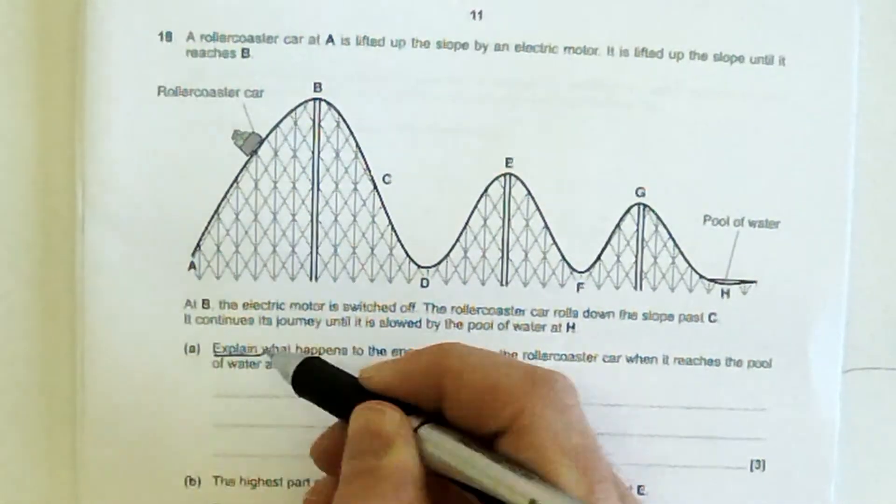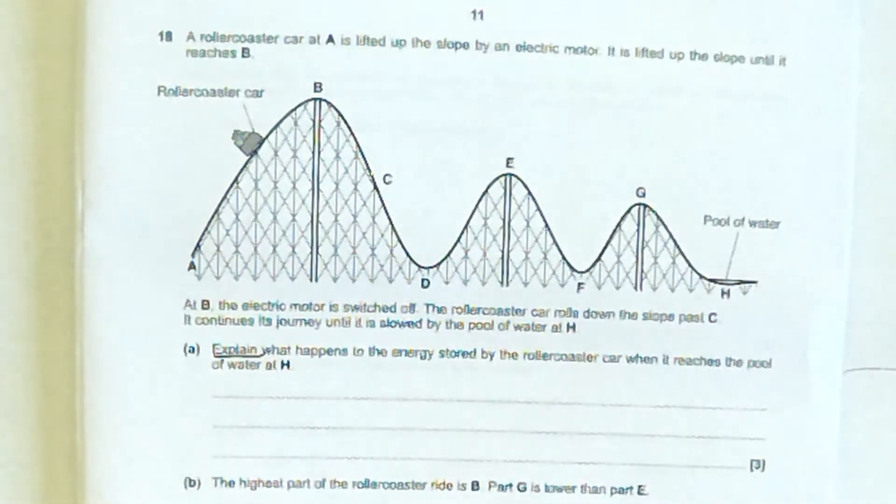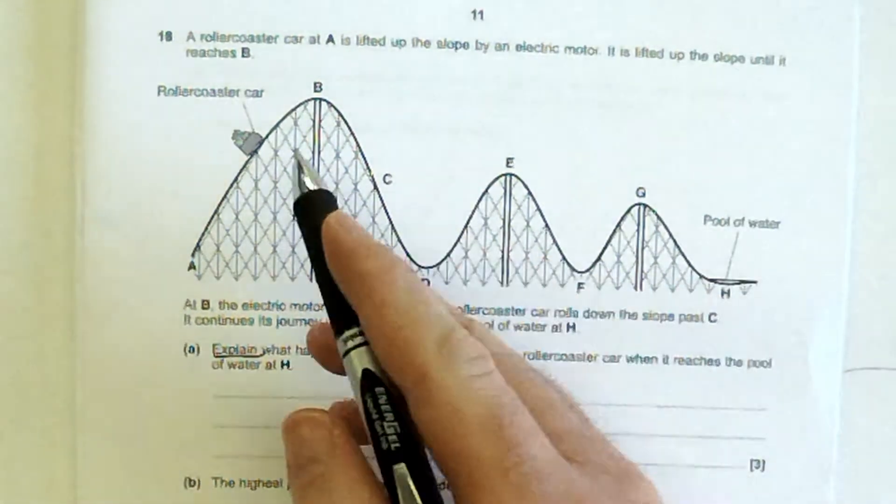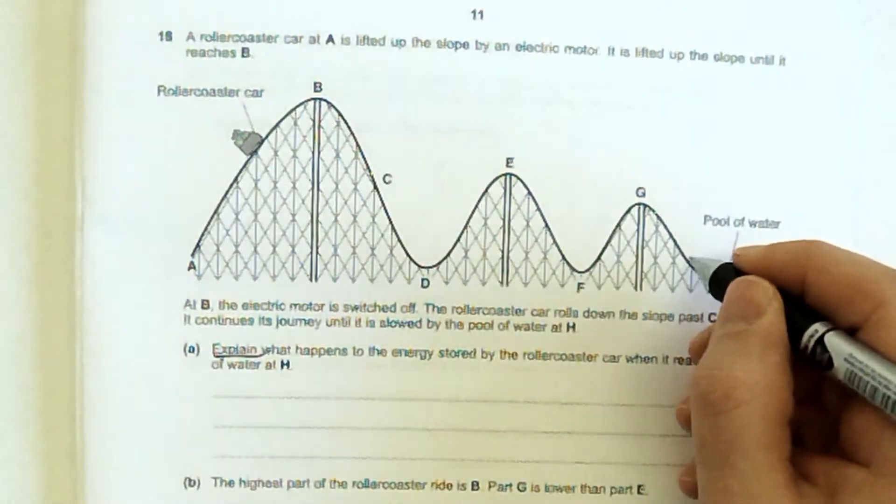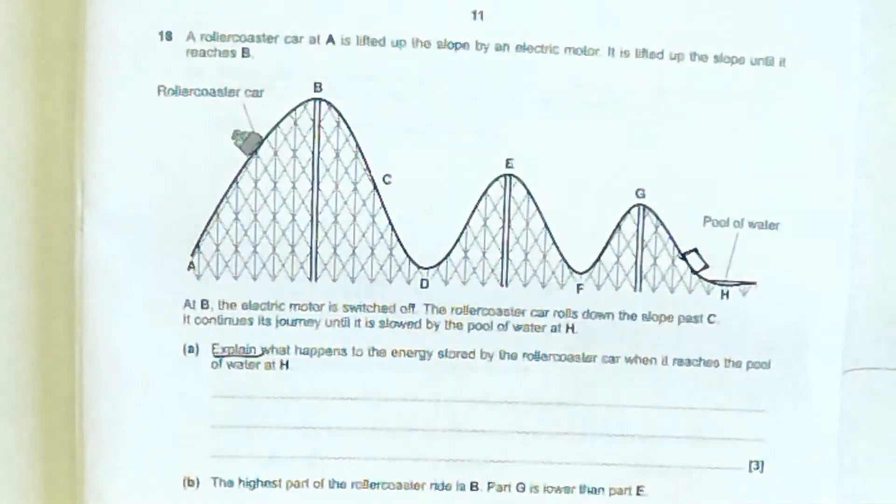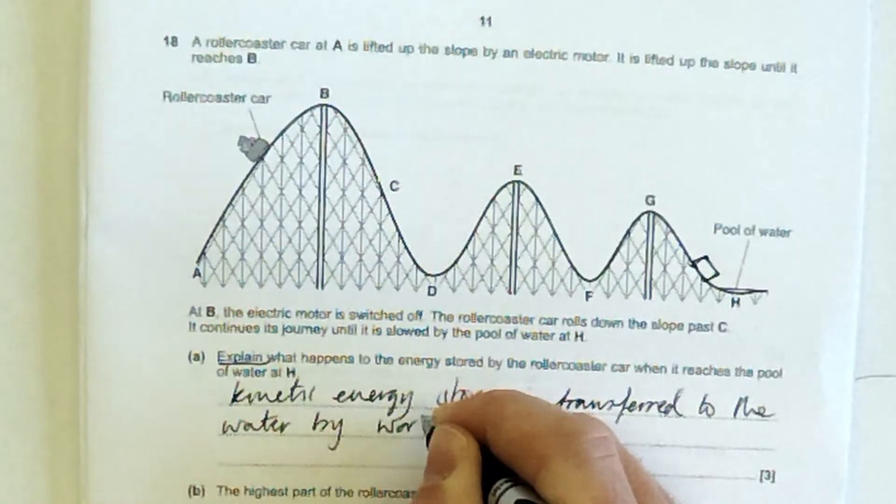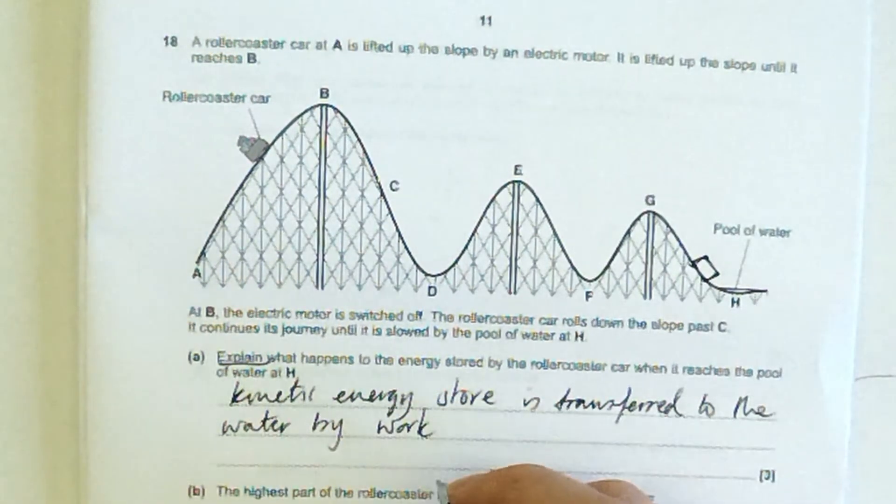So explain what happens to the energy stored by the rollercoaster car when it reaches the pool of water. So notice they haven't told you we're not interested in B, C, all of this stuff yet. We're just interested in the car here. What is the energy stored by the rollercoaster at the start? The kinetic energy store is transferred to the water, and it does that by doing work, by doing forces.